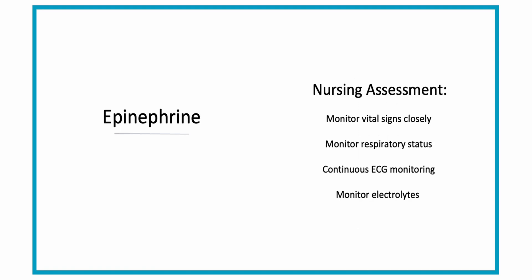For your nursing assessment on a patient taking epinephrine, you're going to want to monitor their vital signs very closely, watching their blood pressure and heart rate, and watching their respiratory status for any increased work of breathing, diminished lung sounds, or changes in lung sounds. Continuous ECG monitoring should be used throughout the entire IV infusion. You should also monitor your patient's potassium levels, since epinephrine can cause a decrease in potassium, and watch out for hyperglycemia.